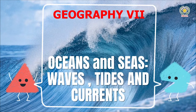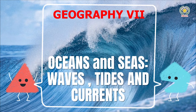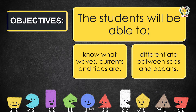Grade 7 students, our topic for today is about oceans and seas, waves, tides, and currents. The objective of this lesson is you'll be able to know what waves, currents, and tides are, and you need to know the difference between seas and oceans.